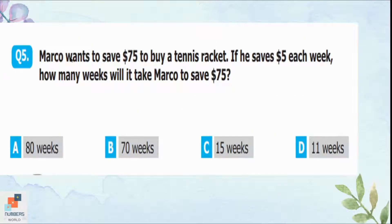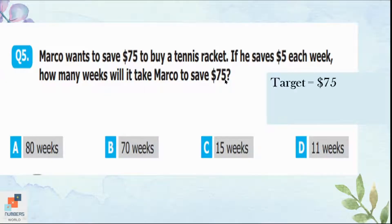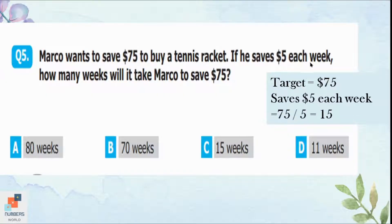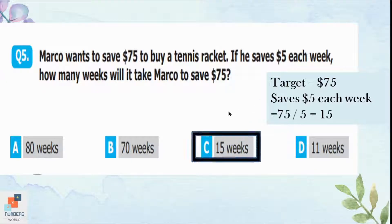Question 5: Marco wants to save 75 dollars to buy a tennis racket. If he saves 5 dollars each week, how many weeks will it take? His target is 75 dollars and he saves 5 dollars per week, so we divide 75 by 5, which equals 15. He can save 75 dollars in 15 weeks — option C.